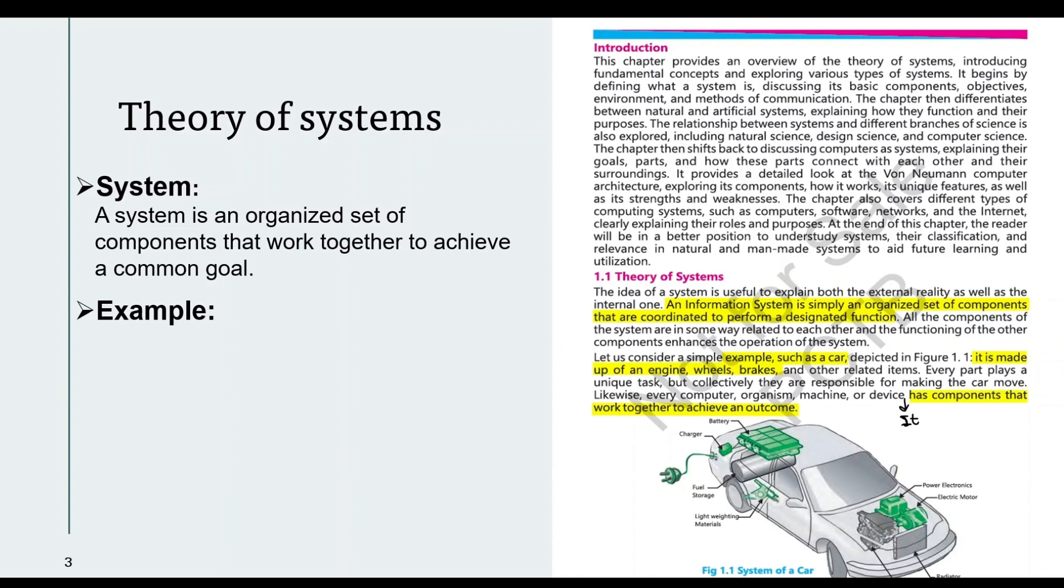Besides this, we will also cover the book. If you look, the book has the definition of information system written. Basically both are the same - if you want you can write the definition of system or you can write information system, both are the same. So students, this is also short question number one from the exercise: What is system and write its basic components? For 'what is system' you will write its definition, and its components we will cover in the next topics.